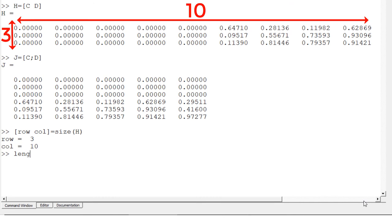You often need the larger dimension only between row and column and you can use the length function. So, the larger dimension of matrix H is 10.